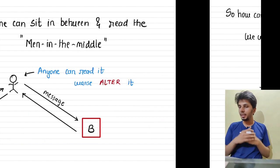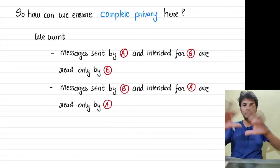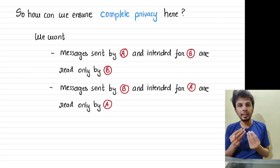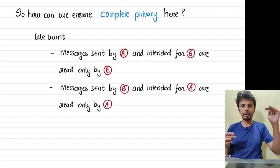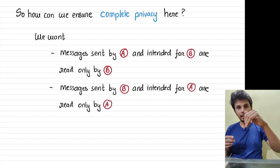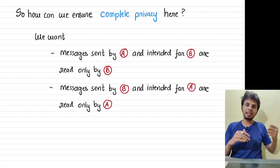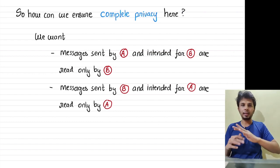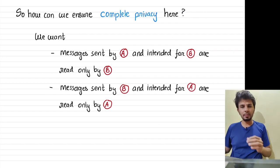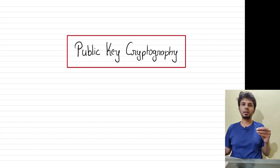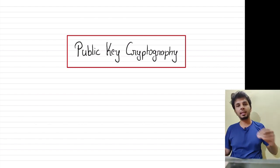As part of the solution, what we want is complete privacy. The basic criteria we want to satisfy is: any message sent by A intended for B can only be read by B, and vice versa — a message sent by B intended for A can only be read by A. The solution to this problem is a simple yet effective cryptography method called public key cryptography.